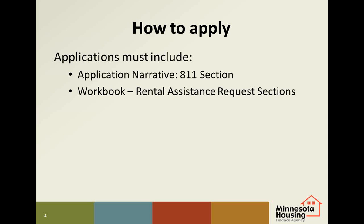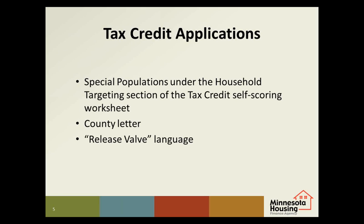The instructions for completing this table are detailed on the application checklist. For tax credit applications, developers may consider taking the Special Population Points under the Household Targeting section. A letter from the county stating that the necessary services are available for the Special Population will be required. If the county has any questions about the Section 811 program, they can contact one of our staff for more information. If we determine that the Section 811 PRA units are not feasible for the development and the application is selected for housing tax credits, the application will receive the Special Population Points and the development will be held to the requirement.